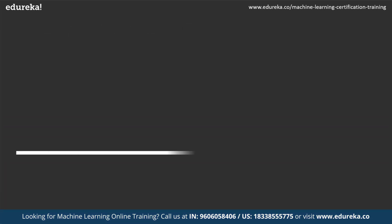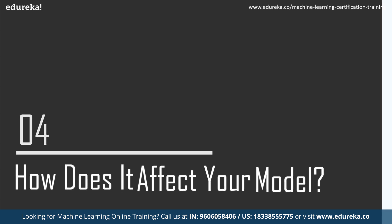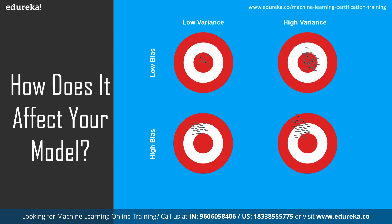Now let's look at how bias and variance actually affect the machine learning model. We can put the relationship between bias and variance into four categories: high variance and high bias, low variance and high bias, high variance and low bias, and low variance and low bias. In the case of high variance and high bias, the model will be inconsistent and inaccurate on average. For low variance and high bias, the models are consistent but inaccurate on average. Low variance and low bias is the ideal scenario — the model is consistent and accurate on average.